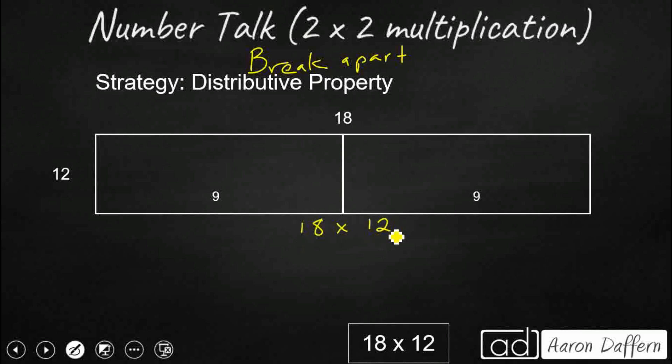So I'm going to take my 18 and as you can see, I'm going to just reimagine it as 9 plus 9. And what I'm going to do is I'm going to multiply that 12 by both of those 9s and that just gets me smaller partial products. That's a little bit easier for me to mentally multiply.